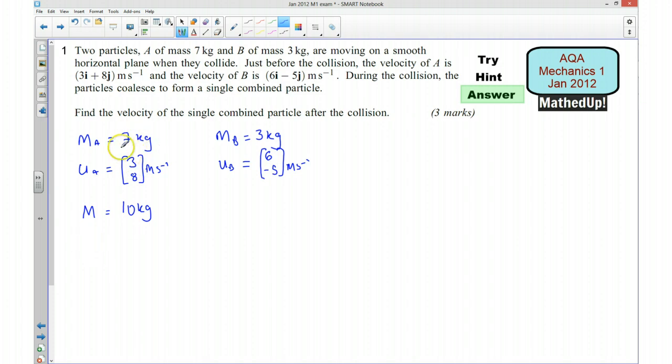So the momentum before is going to be 7 multiplied by [3, 8], plus 3 multiplied by [6, -5]. So that's the total momentum before. And that's going to be equal to the total momentum afterwards.